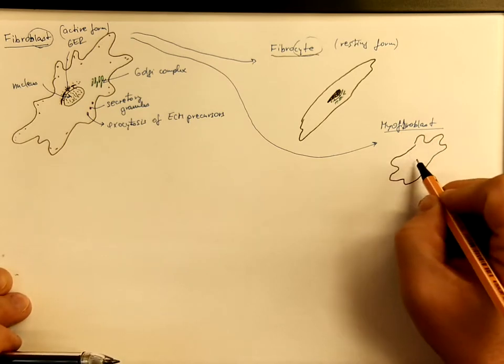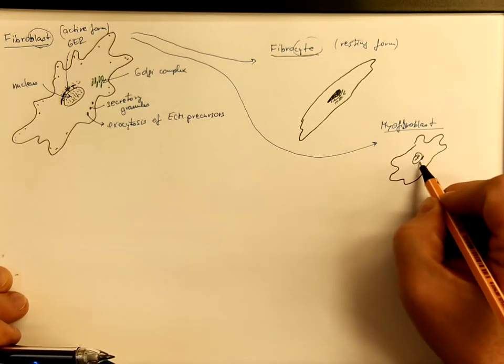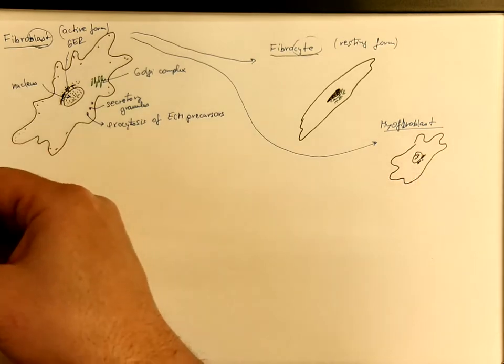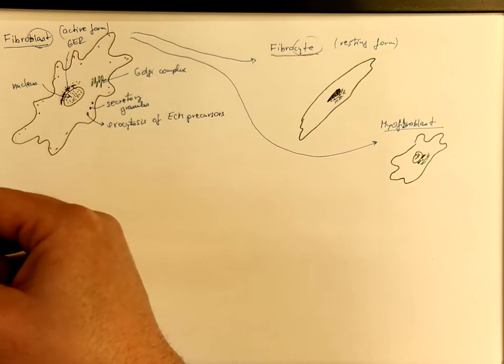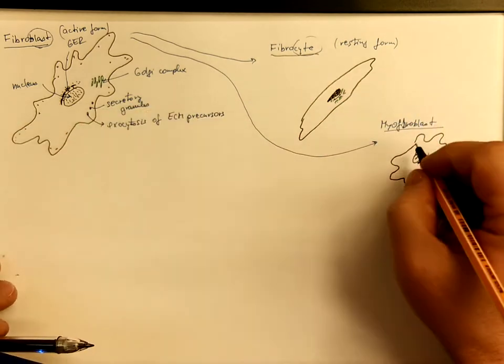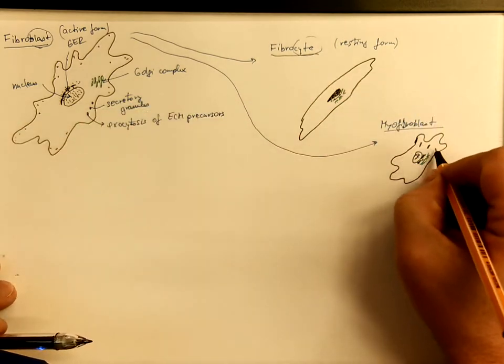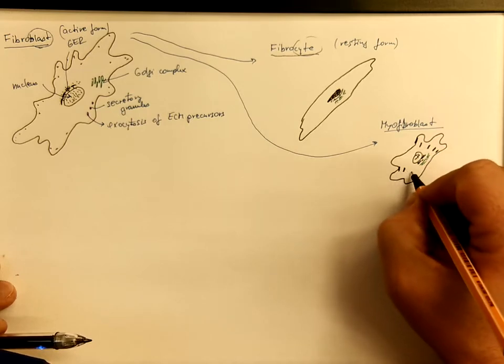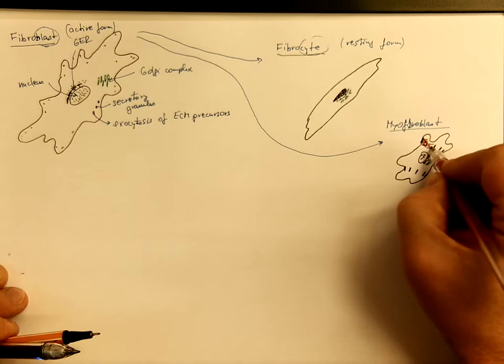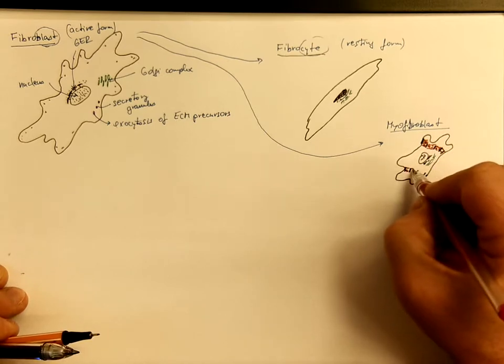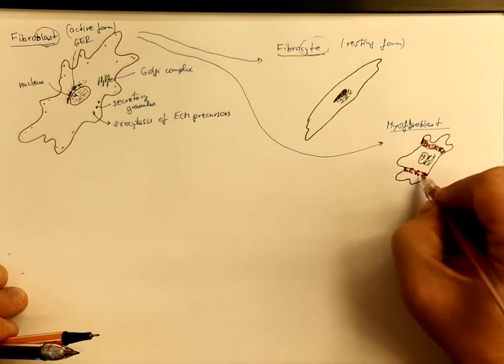However, it contains contractile myofilaments that are attached to dense plaques and dense bodies. And these contractile myofilaments run across the cytoplasm, giving the cell the ability to contract. These cells are quite important for wound retraction during wound healing.